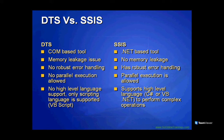COM tools like C++ and VC++ don't have a garbage collector, so they have memory leakage issues. Because of this, we couldn't do robust error handling in DTS. Also, DTS does not support parallel execution, whereas SSIS does. DTS only supports scripting languages, while SSIS supports high-level language support including C# .NET and VB .NET for complex operations.